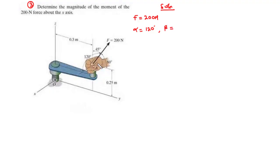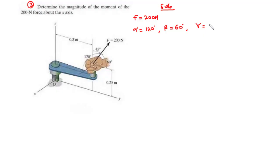Let beta be the angle formed between F and the y-axis — that is 60 degrees. And let gamma be the angle formed between F and the z-axis — that is 45 degrees.